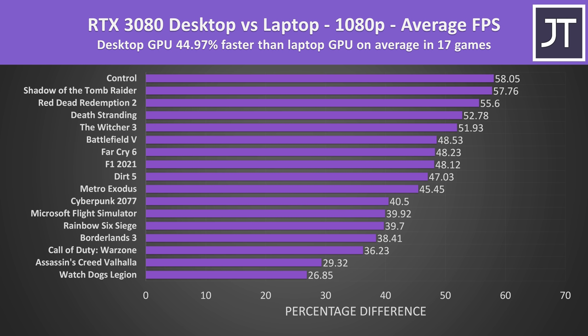On average over all 17 games tested at 1080p, the desktop RTX 3080 was 45% faster than the laptop — a larger difference compared to the 28% difference we saw when comparing a 3070 laptop and 3070 desktop. Even the worst case results are near that, while in the best case we're almost seeing 60% gains in Control.